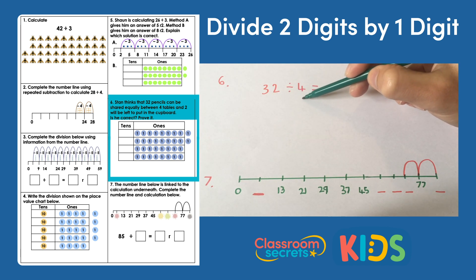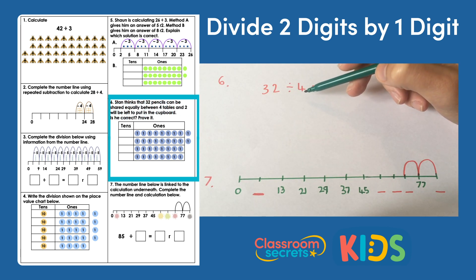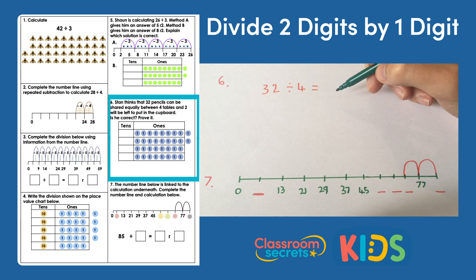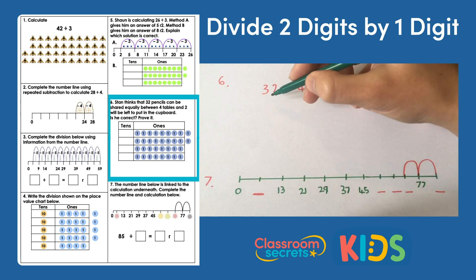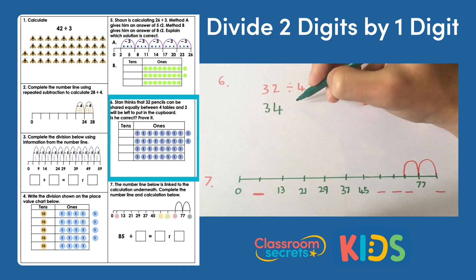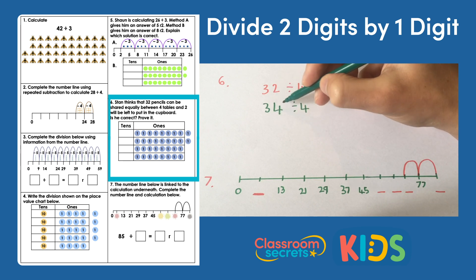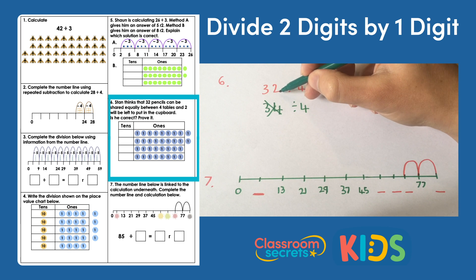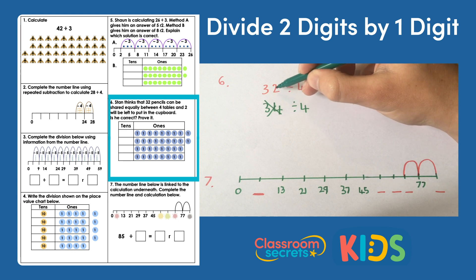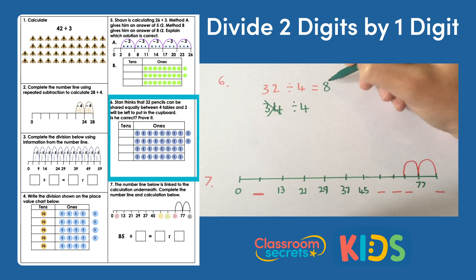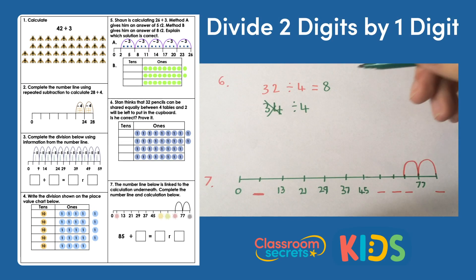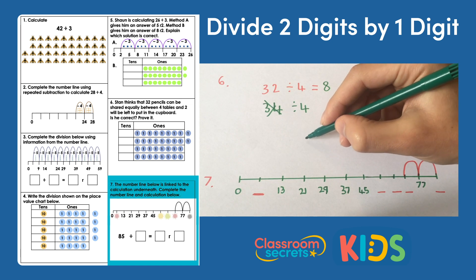Number six: Stan thinks that 32 pencils can be shared equally between four tables with two left over for the cupboard. He's used a place value grid with counters, but if you count those counters he's actually done 34 divided by 4, not 32. Two of those counters need to be removed to make 32. He has four rows in his place value chart, which is correct, but once you remove the extra two ones, each row gives an answer of eight. So 32 divided by 4 is 8 with no remainder — Stan is incorrect.